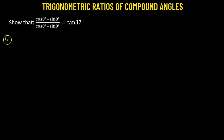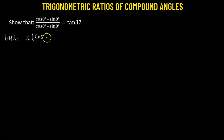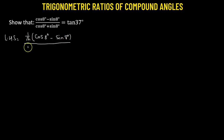We'll start from the left-hand side. What we'll do is multiply both the numerator and the denominator by a factor of 1 over square root of 2. So we have 1 over square root of 2 multiplied to cosine 8 degrees minus sine 8 degrees in the numerator, and 1 over square root of 2 multiplied to cosine 8 degrees plus sine 8 degrees in the denominator.